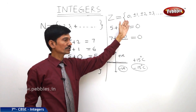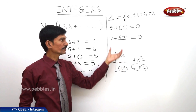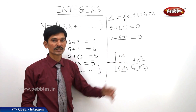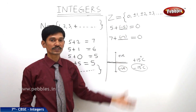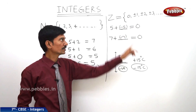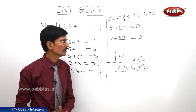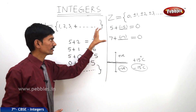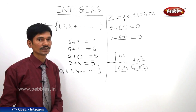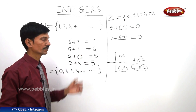The positive numbers are called positive integers and the negative numbers are called negative integers. Zero is neither positive nor negative. Now let us discuss the set of integers in detail.